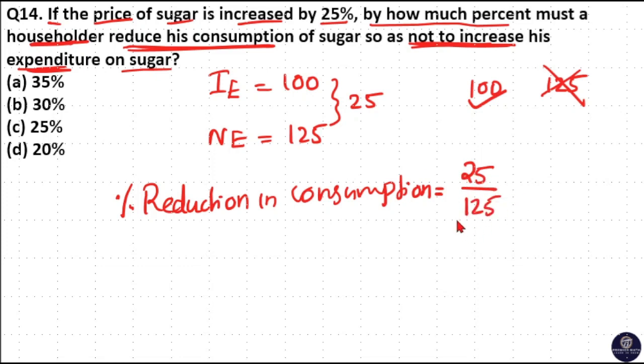To find percentage reduction in consumption, convert it to percentage terms by multiplying by 100. That is 25 divided by 125 times 100, which equals - 25 goes 5 times in 125, 5 goes 20 times in 100.